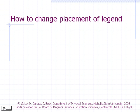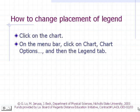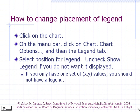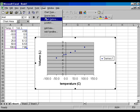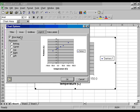How to change the placement of the legend: Click on the chart. On the menu bar, click Chart, Chart Options, and then the Legend tab. Select the position for the legend. Uncheck 'Show Legend' if you do not want it displayed. If you only have one set of XY values, you should not have a legend. Click OK when done.